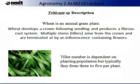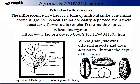Wheat is an annual grass plant. Wheat develops a crown following seed and seedling stages, and produces a fibrous root system. It produces multiple stems called tillers, which arise from the crown and are terminated by an inflorescence containing flowers. Tiller number is dependent on the planting population, but typically they form between three and five per plant. The inflorescence structure in wheat is a long cylindrical spike containing about 30 grains. Wheat grains are easily separated from their vegetative flower parts or chaff during threshing. For a more detailed wheat description, please visit the FAO website on the following link.